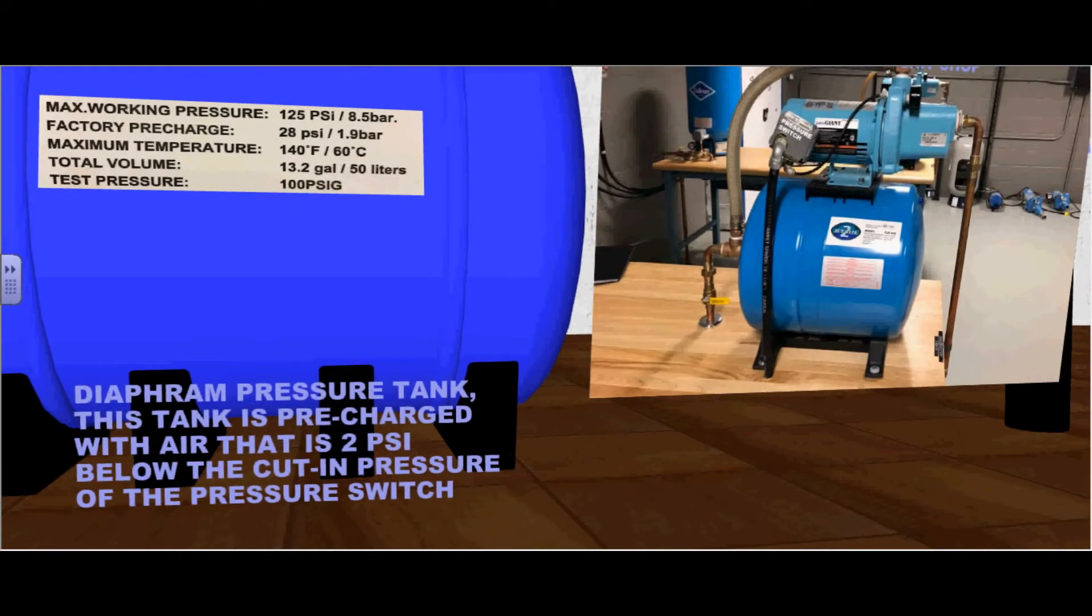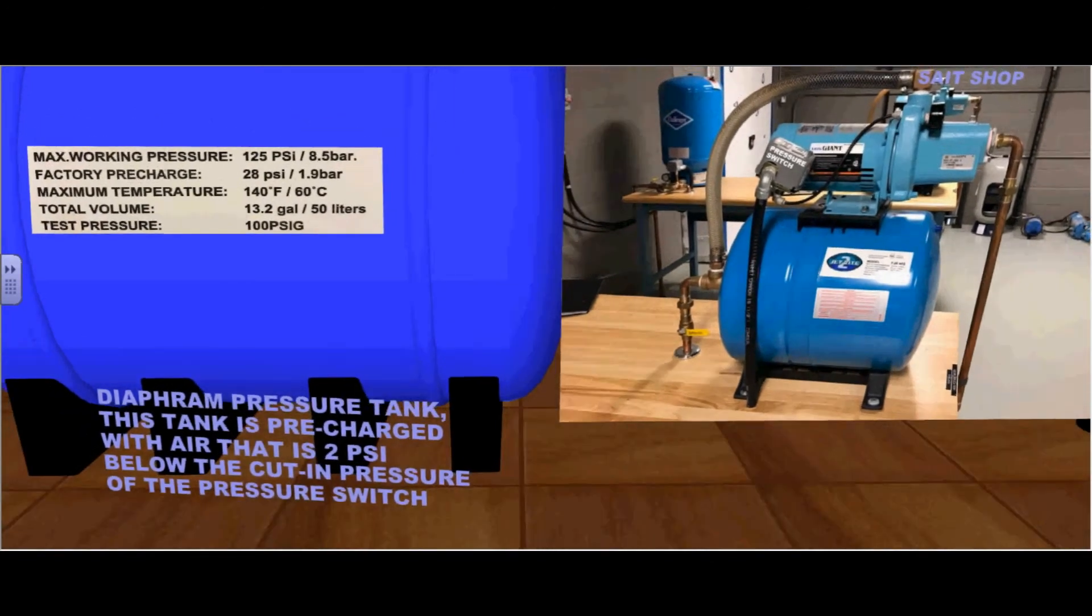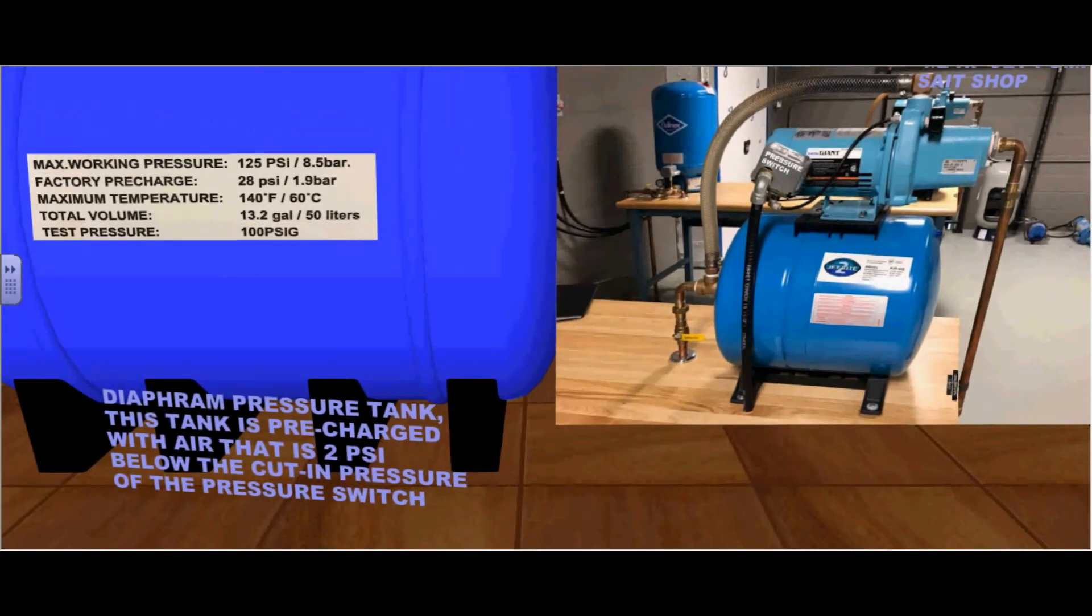This diaphragm pressure tank is pre-charged with air that is 2 psi below the cut-in pressure of the pressure switch. As you can see, it is factory pre-charged at 20 psi, 2 psi below the 30 psi cut-in switch.